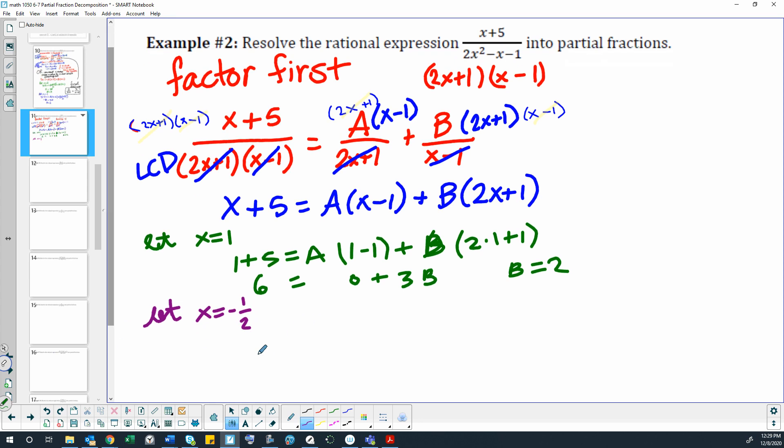So that would be negative 1 half plus 5. Just for fun, I'm going to change 5 to 10 halves because that's 5, right? And then I would have A is negative 1 half minus 1, and B would be B times negative 1 half. Oh, that would be—sorry. Yes.